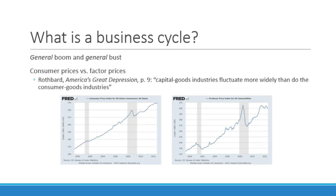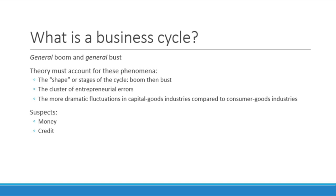Another thing we notice in business cycles is that there's more fluctuation in the prices of capital goods — more dramatic changes in capital goods industries compared to consumer goods industries. Rothbard points this out, and I highly recommend reading America's Great Depression, still the best exposition of Austrian business cycle theory. Looking at the consumer price index versus the producer price index, you see that producer prices — capital goods industries — show more fluctuation. Our theory needs to explain three things: it needs to be general, it needs to explain this capital goods volatility, and it needs to account for the cluster of entrepreneurial errors — all entrepreneurs seem to make the same sorts of errors at the same time.